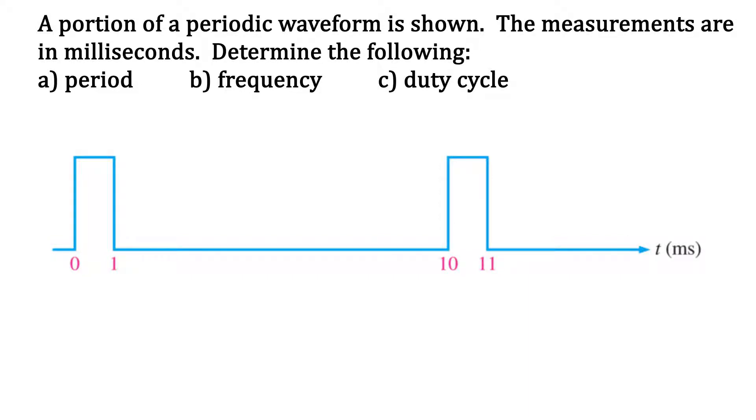Let's look at an example of a portion of a periodic digital waveform. The measurements are in milliseconds, and what we want to find is A, the period, B, the frequency, and C, the duty cycle.